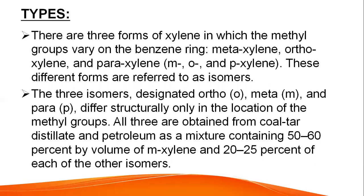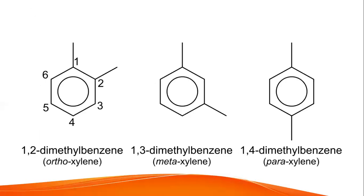Types: there are three types of xylene in which the methyl groups vary on the benzene ring — meta xylene, ortho xylene, and para xylene. These different forms are referred to as isomers. The three isomers differ structurally only in the location of the methyl groups. All three are obtained from coal tar distillate and petroleum as a mixture containing 50 to 60 percent by volume of meta xylene and 20 to 25 percent of each of the other isomers. This is the diagram of ortho, meta, and para xylene.